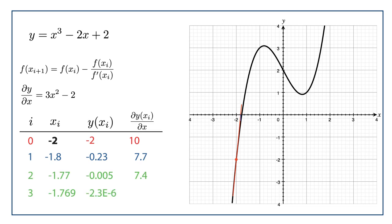If we carry on, then we get the next guess for x_2 is minus 1.77, and that's just 0.005 away from the axis. It's really close. Then if we have another go, after just three iterations, we get an answer of x equals minus 1.769, which is just 2.3 times 10 to the minus 6 from the axis. So in just three iterations, we've pretty much solved the problem, which is pretty cool.